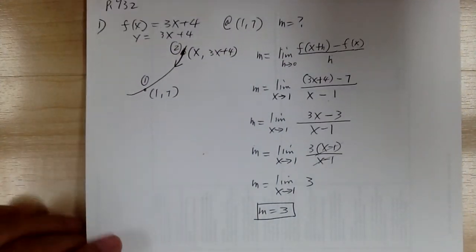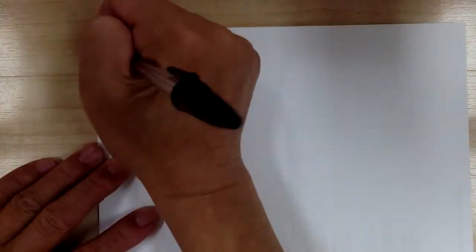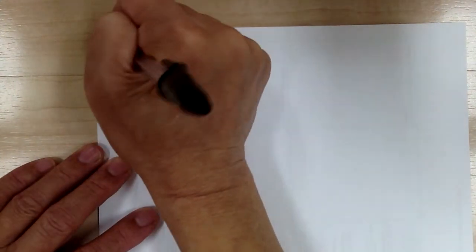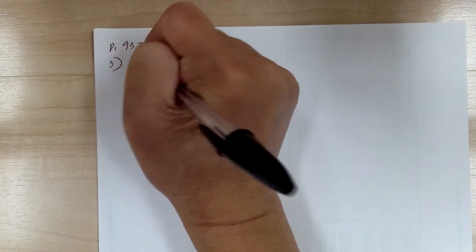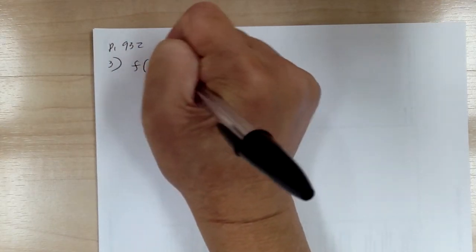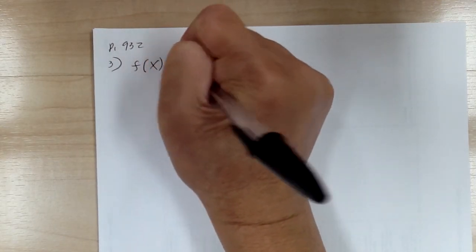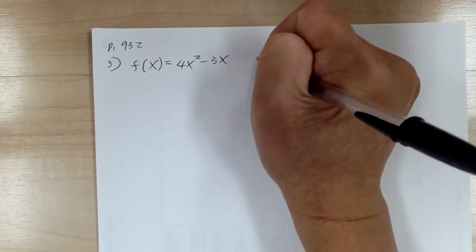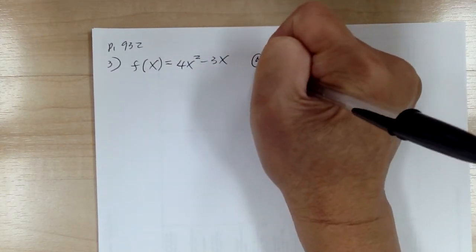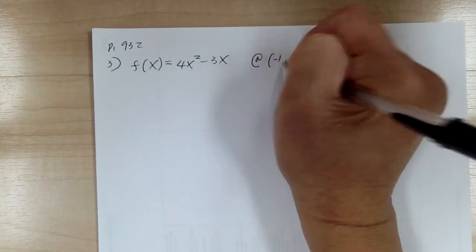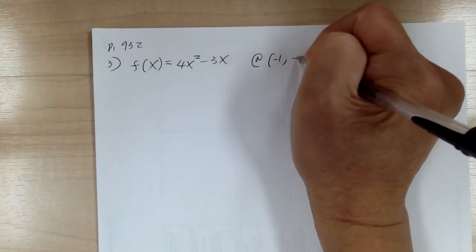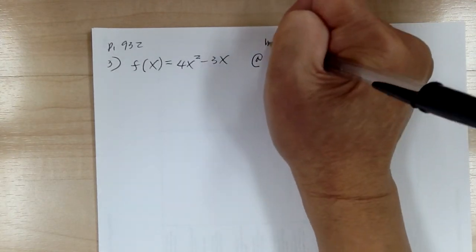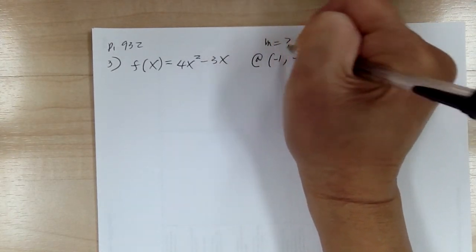Okay, let's go to number 3. You have f of x equal to 4x squared minus 3x. At negative 1, 7. And you're looking for the slope at that point.